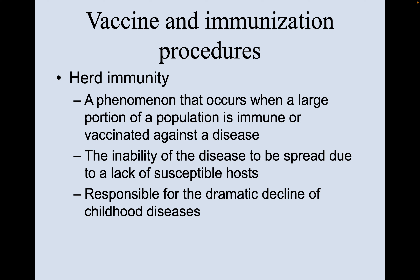Herd immunity is a phenomenon that occurs when a large portion of a population is immune or vaccinated against a disease, resulting in the inability of the disease to spread due to a lack of susceptible hosts. It's responsible for the dramatic decline in childhood diseases. We've done a very good job vaccinating for things like polio — I don't know of a single living human who's ever had polio.